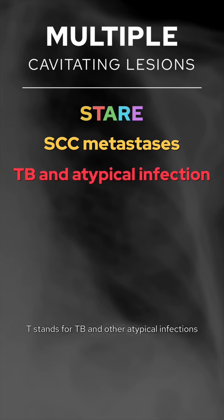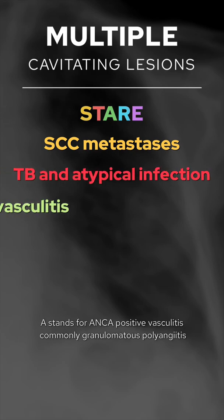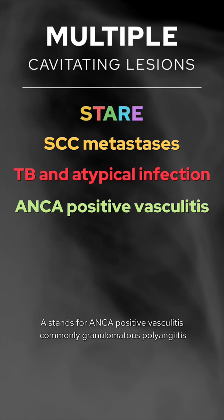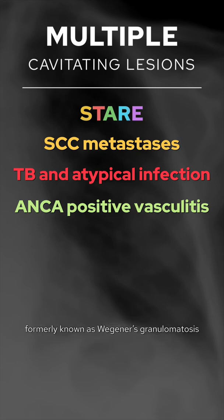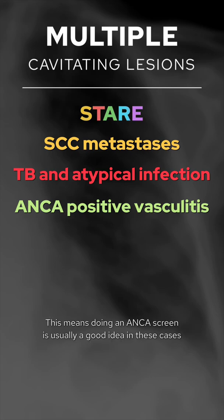T stands for TB and other atypical infections. A stands for ANCA-positive vasculitis, commonly granulomatous polyangiitis, formerly known as Wegener's granulomatosis. This means doing an ANCA screen is usually a good idea in these cases.